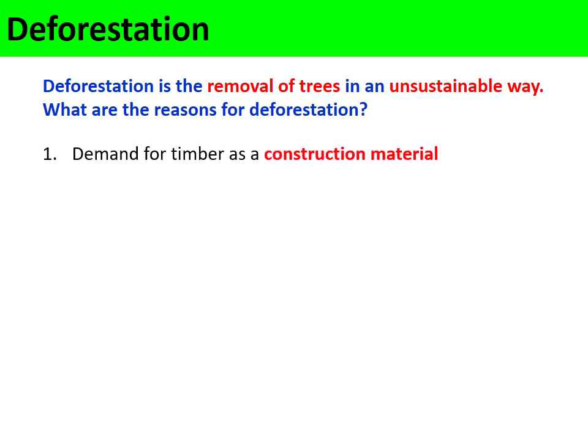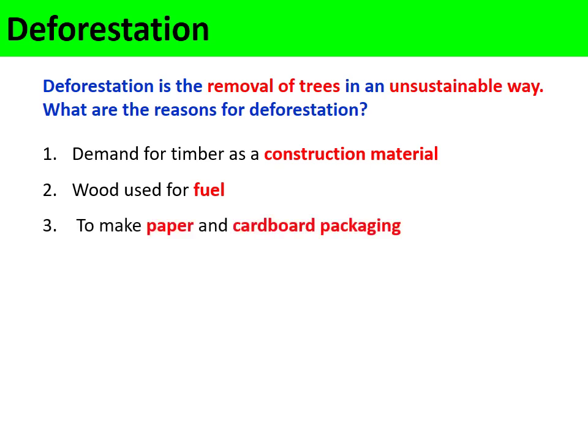There is a high demand for timber as a construction material. Wood is also needed as a fuel — it is a type of biofuel — and when wood is burnt it increases the CO2 concentration in the atmosphere. Wood is also needed to make paper and cardboard packaging, and trees are felled to clear land for agricultural farming, both animal farming and crop farming.